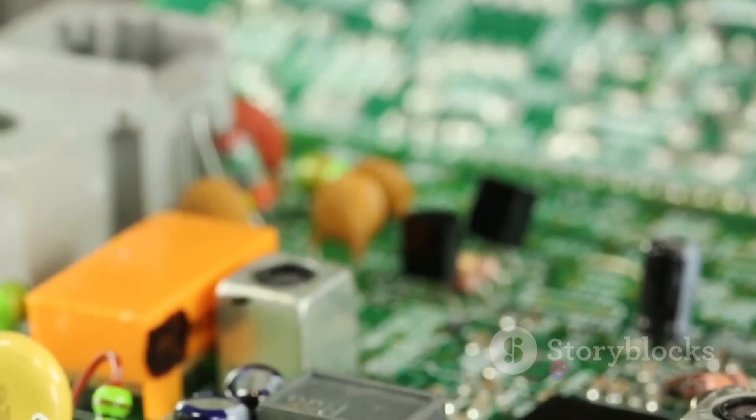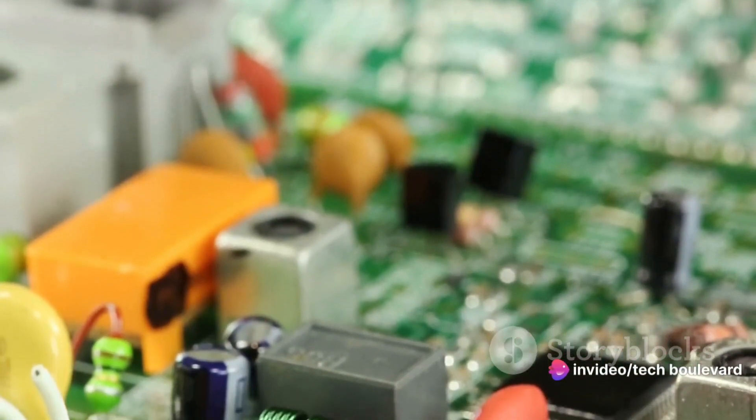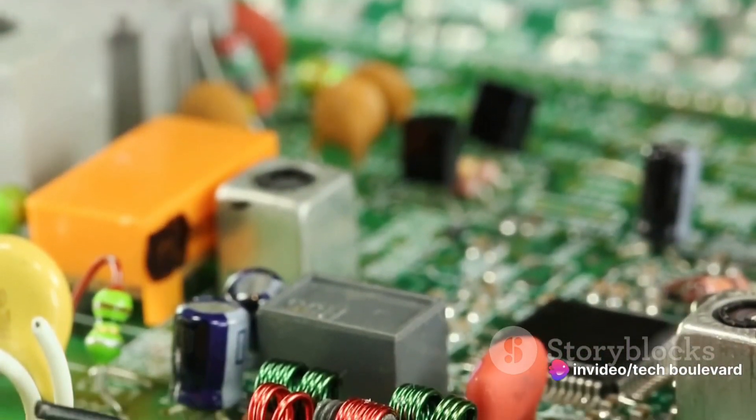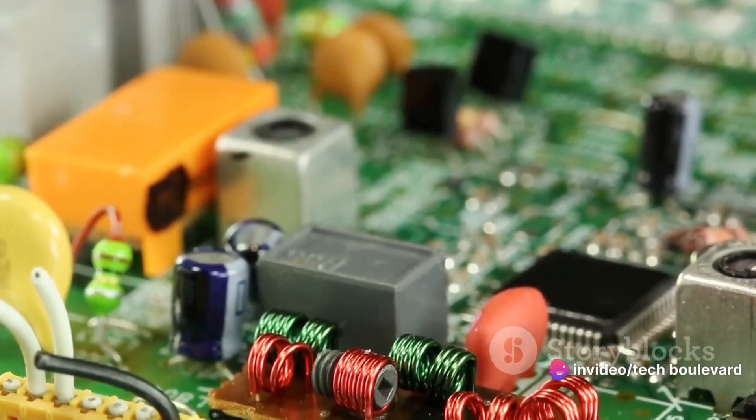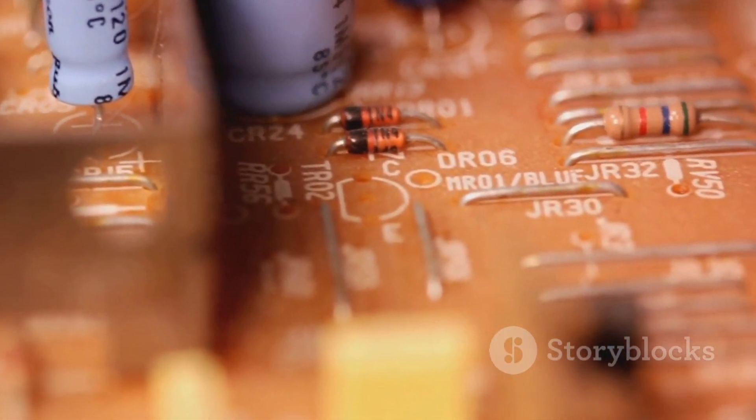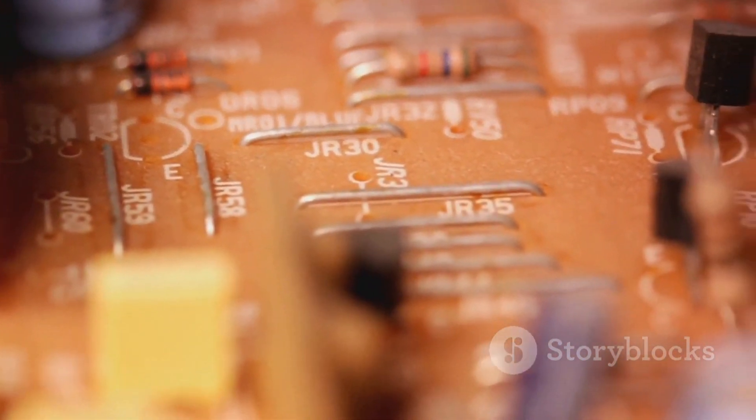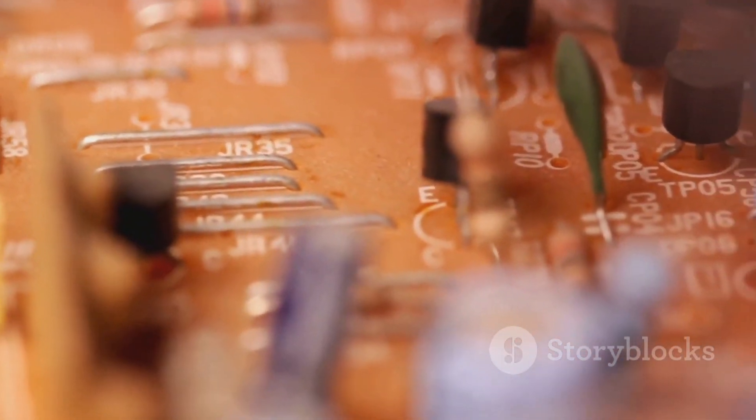Now, a resistor. That's like a gadget's diet plan. It controls how much electricity the gadget eats. Too much, and it might blow a fuse. Too little, and it won't function. It's all about balance, just like your favorite health guru would say.